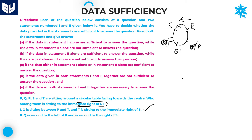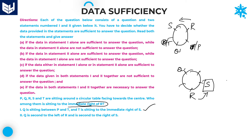Now let us look at statement 2 alone: Q is second to the left of R, and Q is second to the right of S. Taking R at a position, Q is second left of R. Then placing S such that Q is second right of S fixes those positions. With all 5 members placed, the immediate right of R is clearly determined. You get the answer using statement 2 alone as well. Therefore, the required answer is option C — either of the statements alone is sufficient.